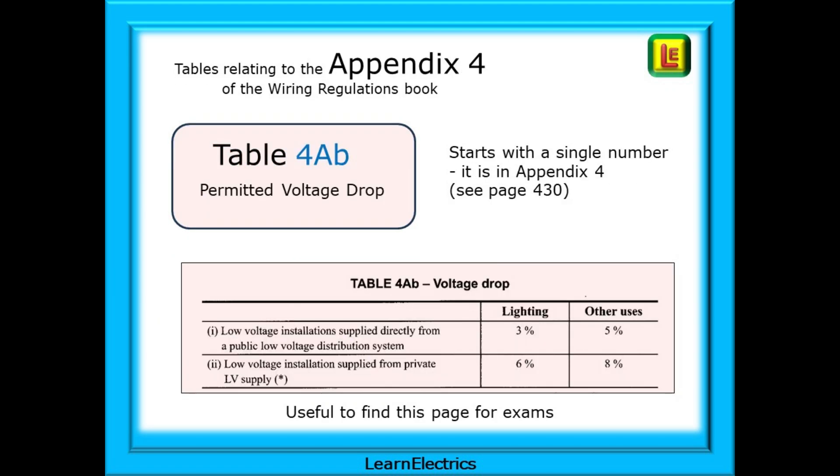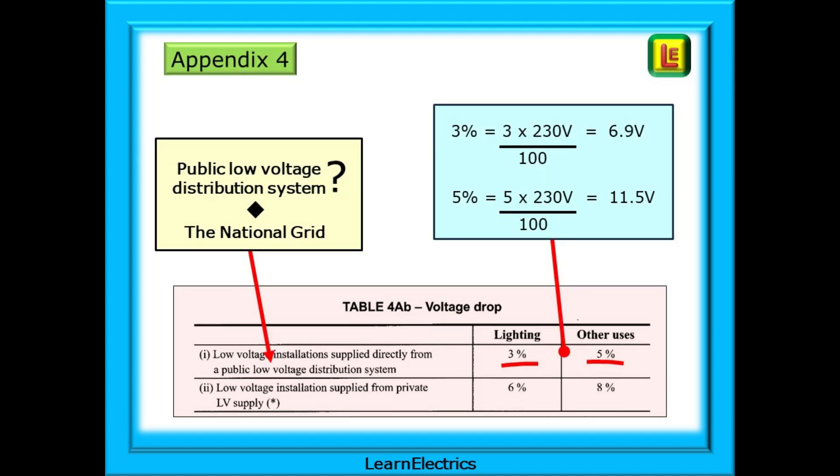Let's look at some of the tables that relate to Appendix 4 of the wiring regs book. We should start with table 4AB, to do with permitted voltage drop. Learn to find this page. It contains useful information that you may need for some questions in your 18th edition exam. Table of tables will direct you to page 430. What data is making up this page? It talks about a public low voltage distribution system. For most of us, this will be the national grid - what comes in at the front door to the house, the shop or factory.